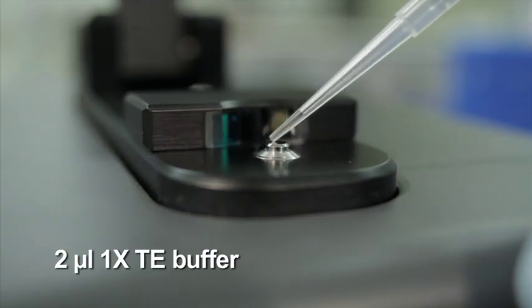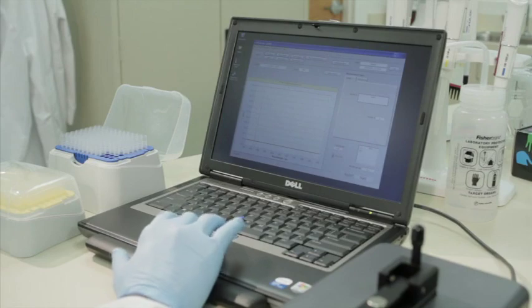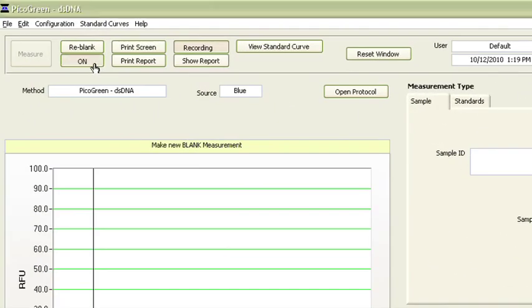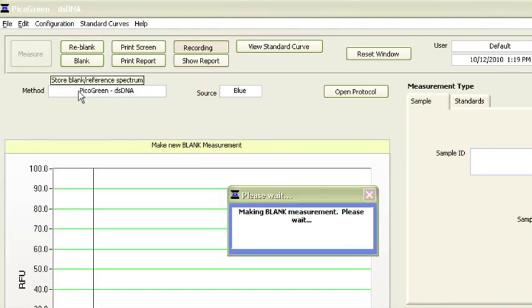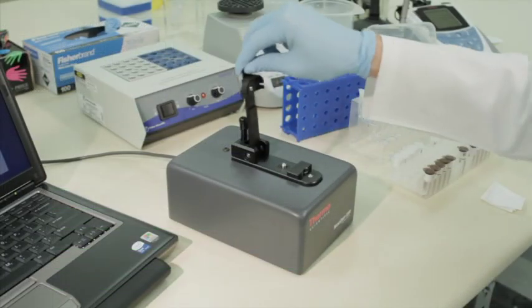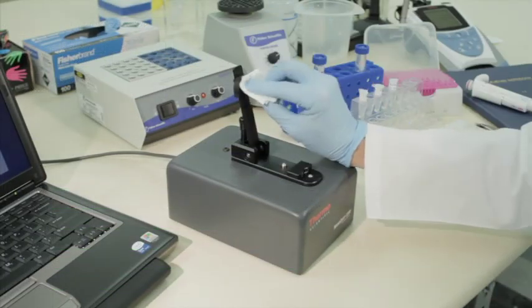Pipet 2 microliters of 1X TE to the lower pedestal, close the lever arm, and select blank in the instrument software field. Once the blank is complete, blot off the blank solution from both surfaces of the sample retention system.